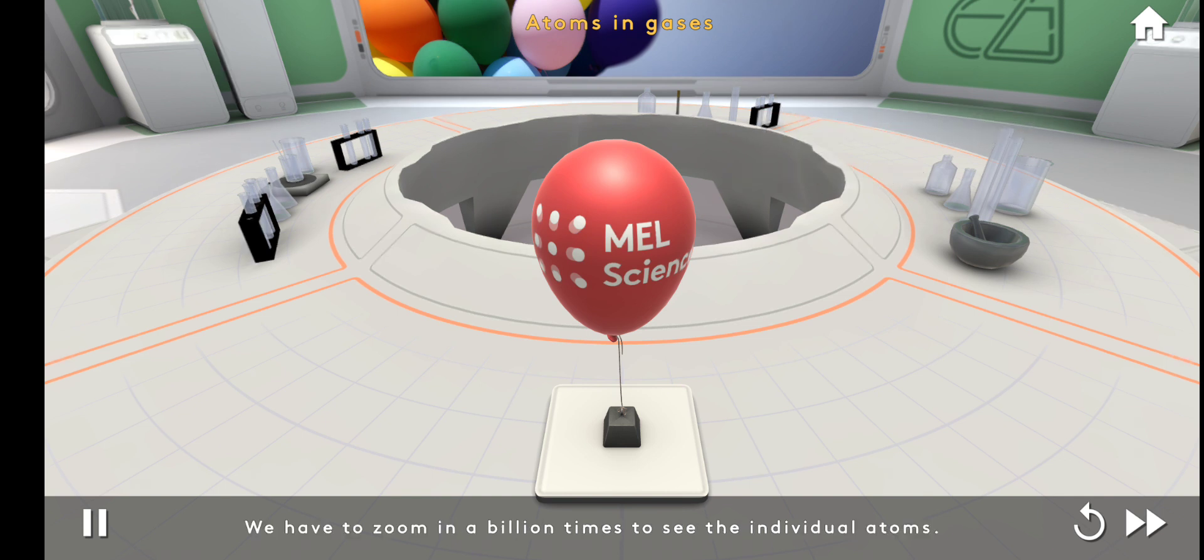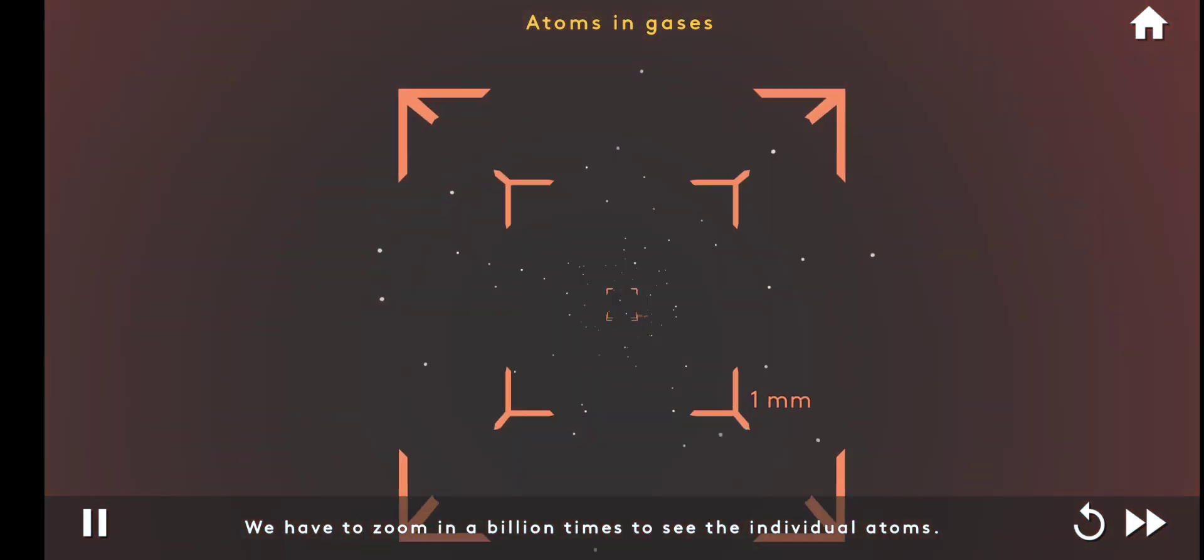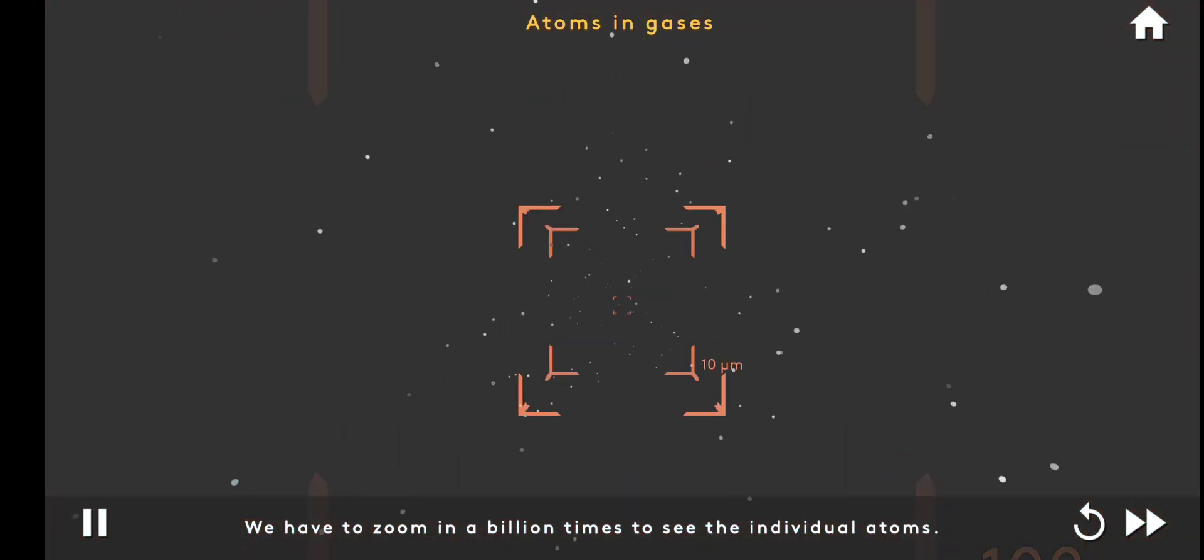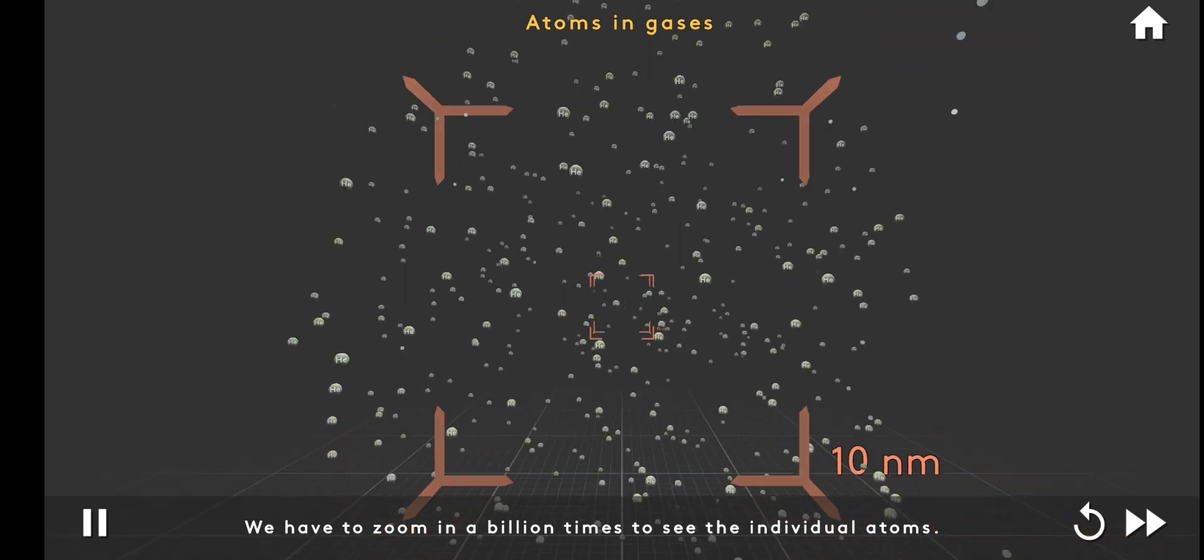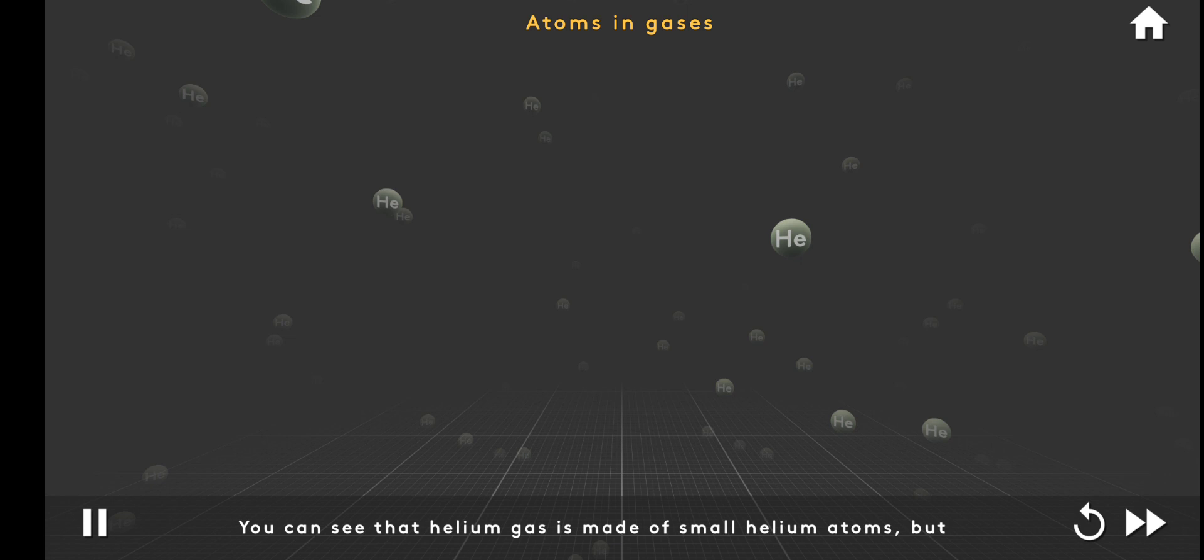We have to zoom in a billion times to see the individual atoms. You can see that helium gas is made of small helium atoms, but these atoms are much further apart than the ones we saw in a diamond.